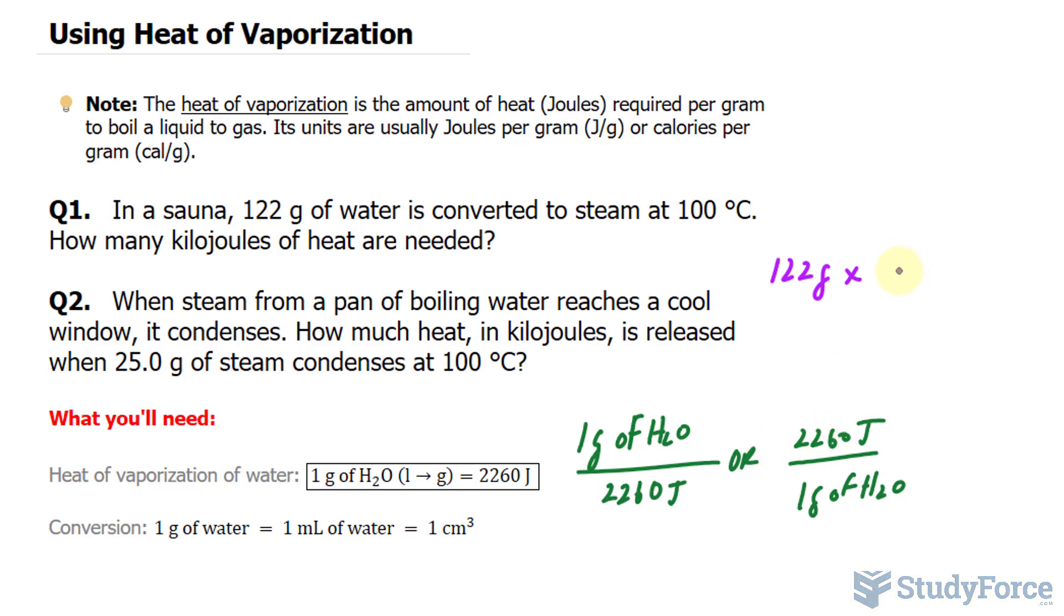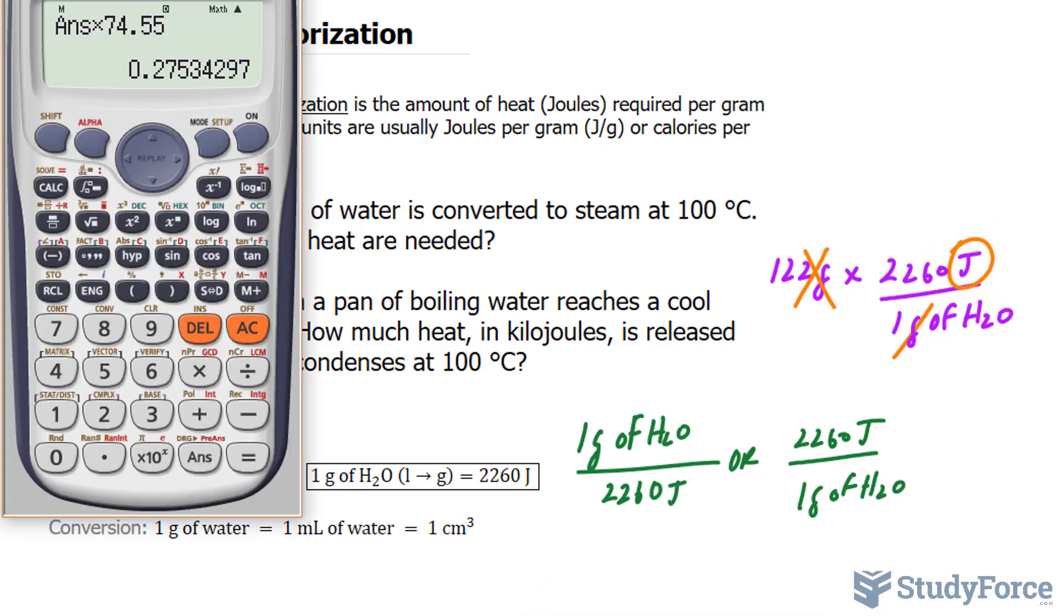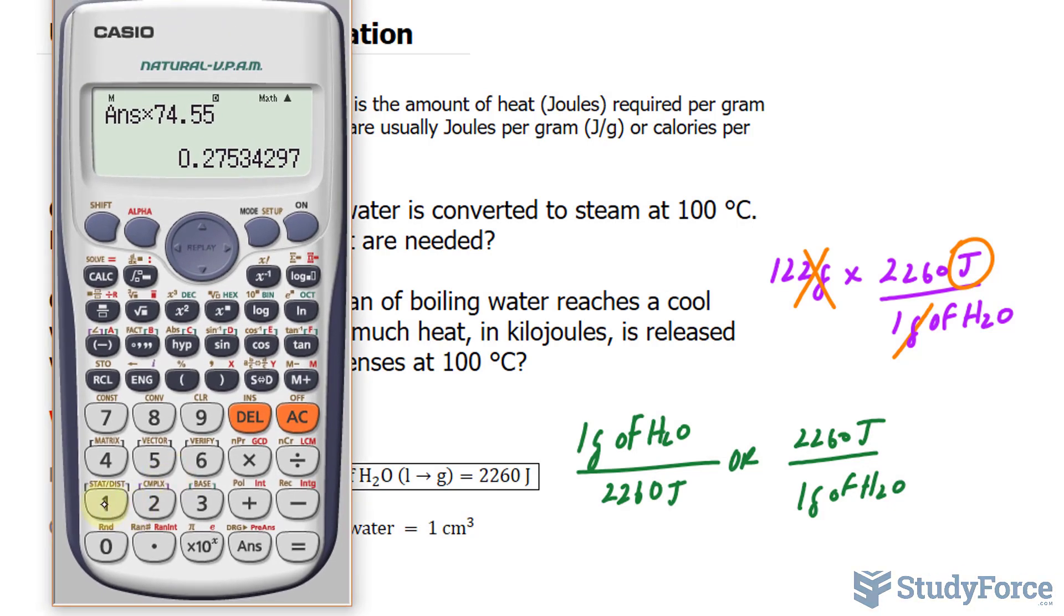And the reason why we're using this is because the technique that I'm using is called dimensional analysis. By using this version, we actually get rid of the unit that we don't need. And the unit that we don't need is grams. So we're left with joules. Let's use our calculator. We have 122 times 2260, and we get 275,720 joules.